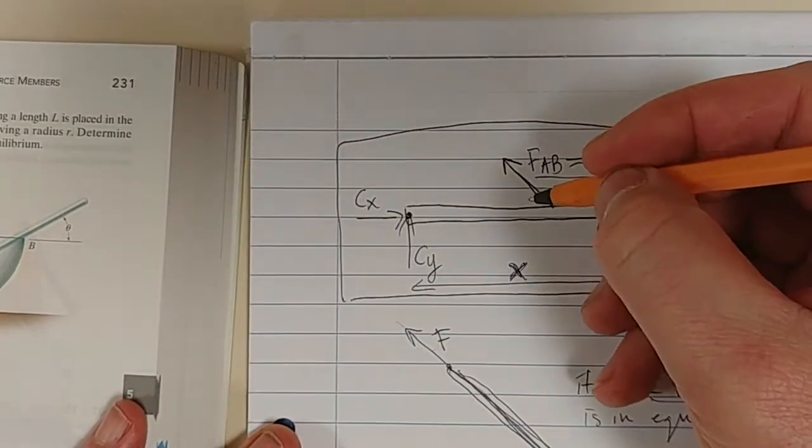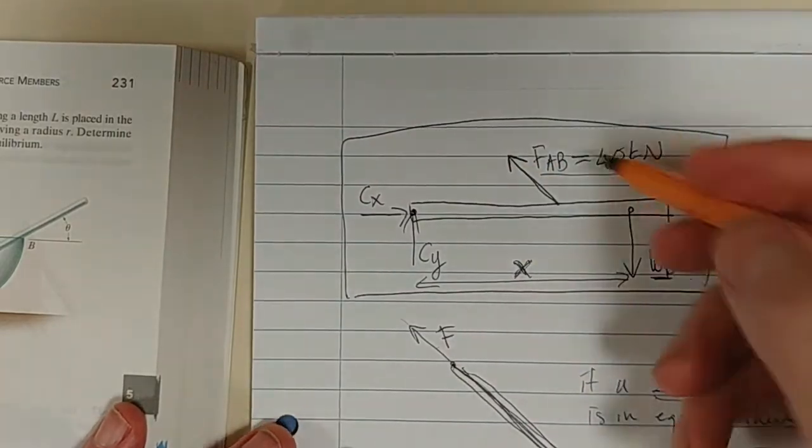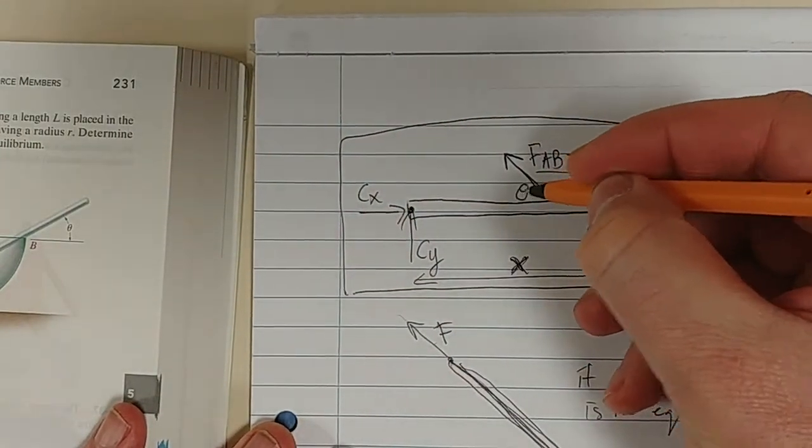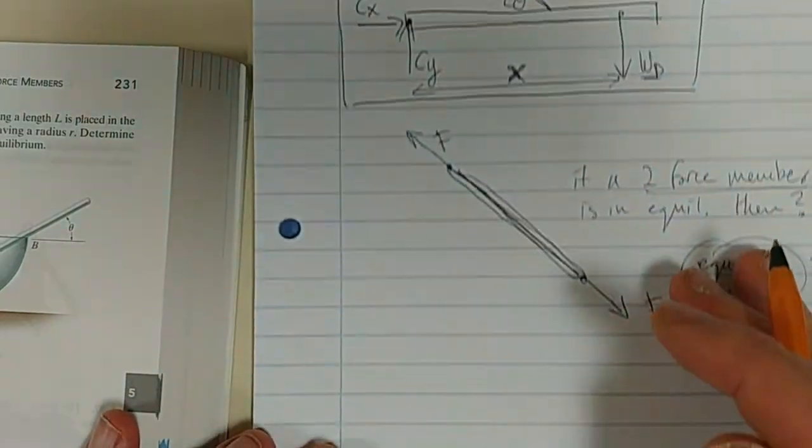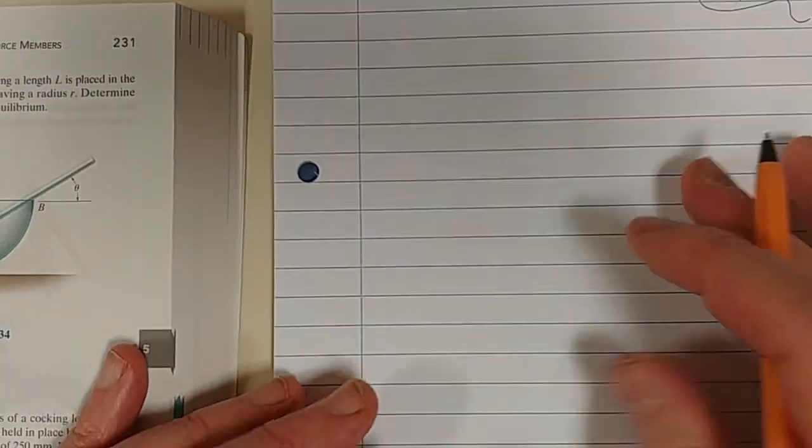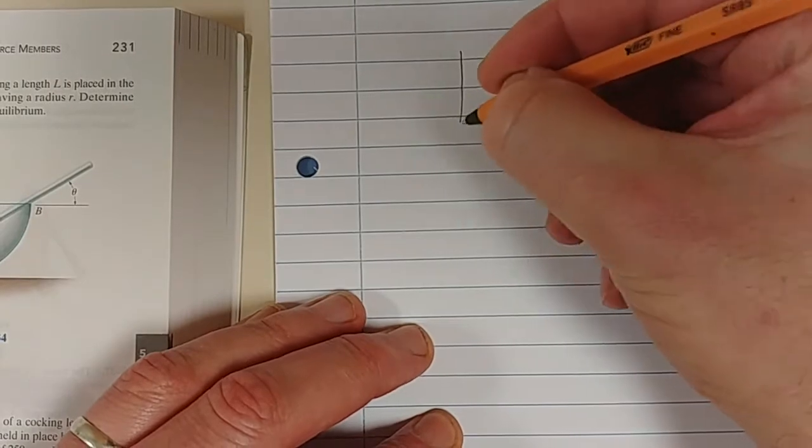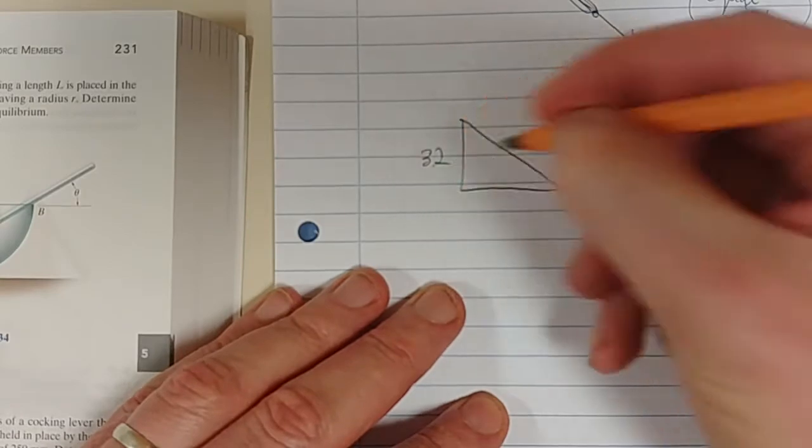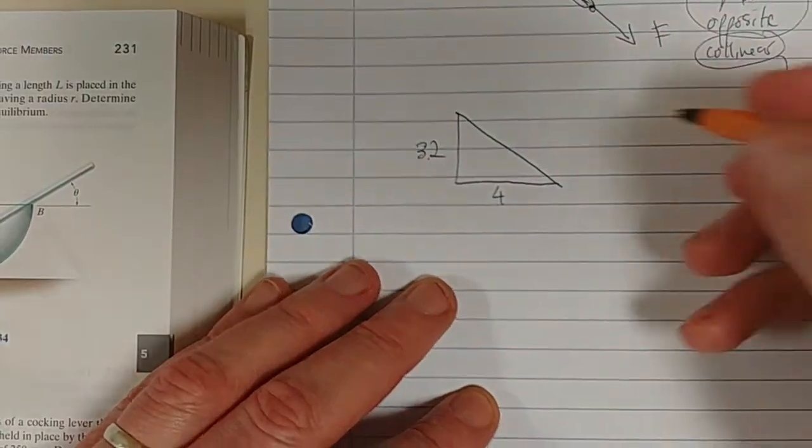So the one thing that we need to now determine, because if we want to take moments about this point, we need to determine what this angle is. And what we know is, that was 3.2, that was 4.